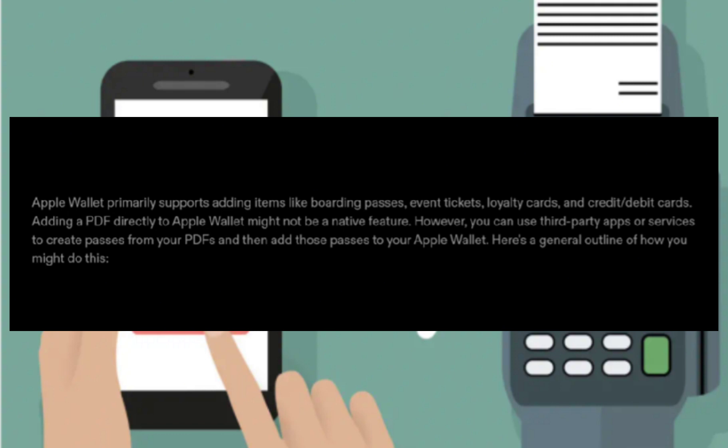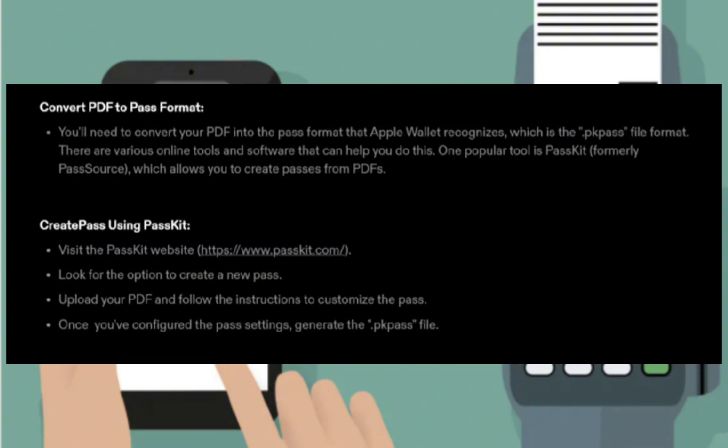Here's a general outline of how you might do this. First, convert your PDF to pass format. You'll need to convert your PDF into the pass format that Apple Wallet recognizes, which is the .pkpass file format. There are various online tools that can help you do this. One popular tool is PassKit, formerly PassSource, which allows you to create passes from PDFs.